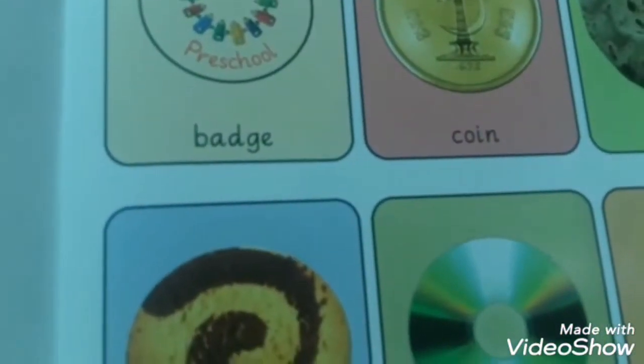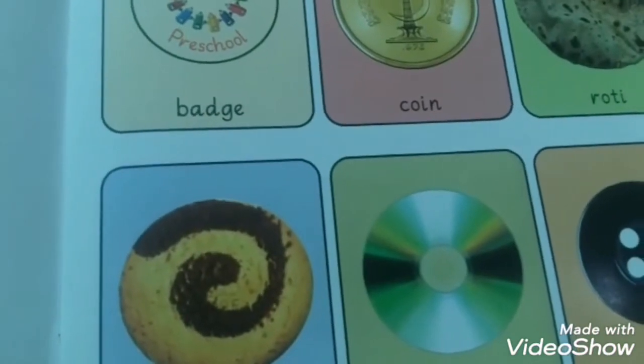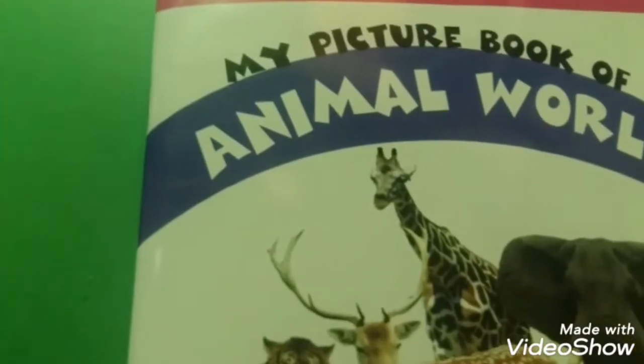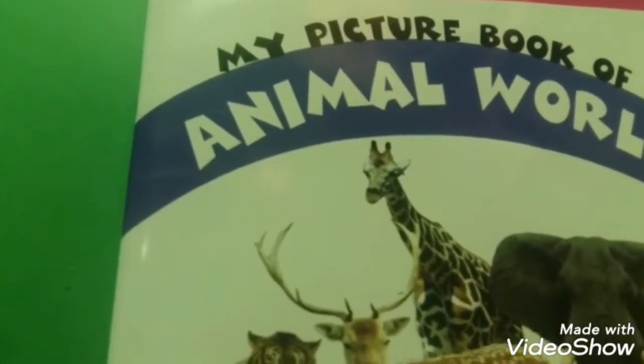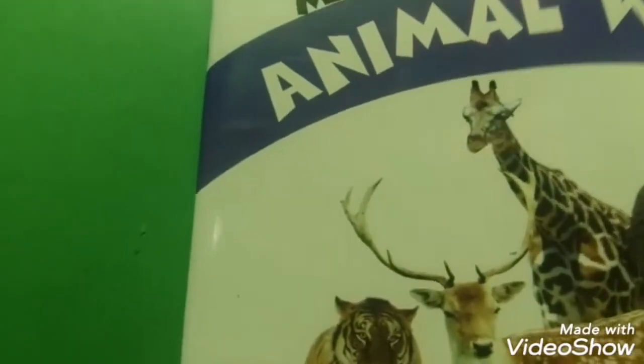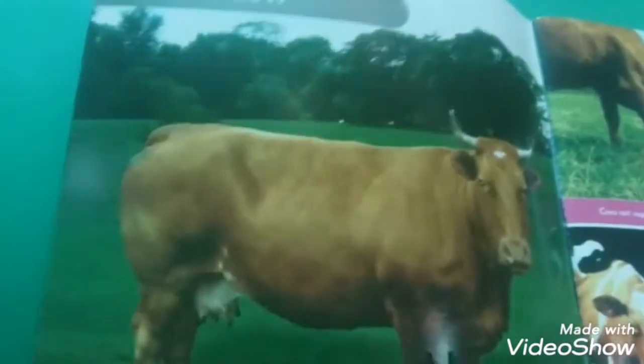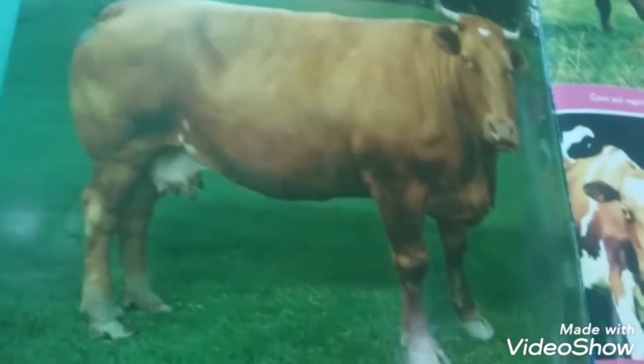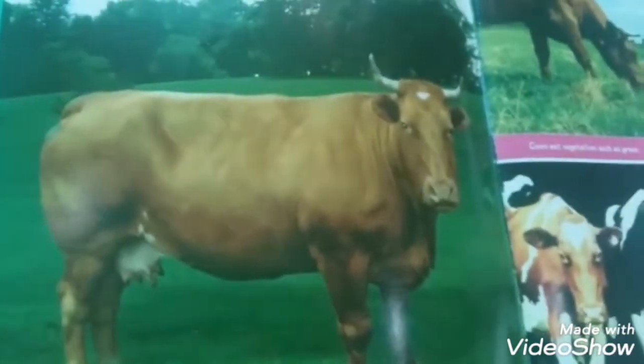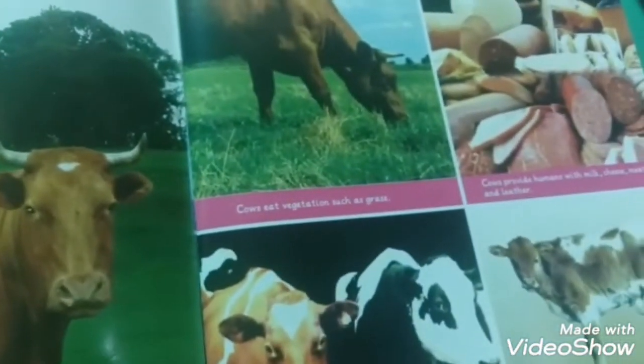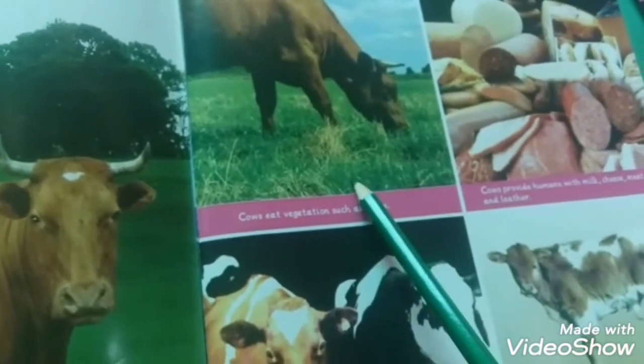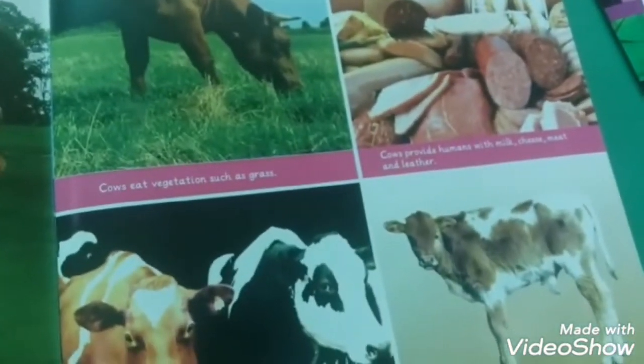Now prep class, this is animal bird. Open it, page number one. This is also your first lecture. This is an animal. The name of this animal is cow. Spell: C-O-W, cow. Cows eat vegetables such as grass. Cows provide humans with milk, cheese, meat, and leather.